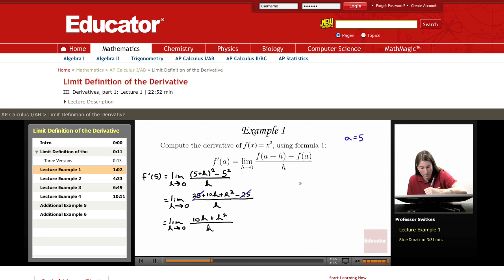And so continuing on, we will have the limit as h approaches 0 of 10 times h over h becomes 10 and h squared over h becomes h.